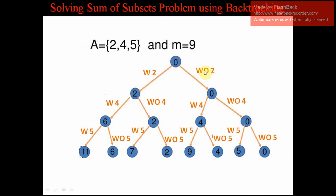Now we go to the right subtree where we are not considering 2, so 0 plus 0 equals 0. From here we consider 4: with 4, 0 plus 4 gives 4; without 4, 0 plus 0 gives 0. From these nodes we again branch on 5: with 5, 0 plus 5 gives 5; without 5, 0 plus 0 gives 0. This completes the full state space diagram.